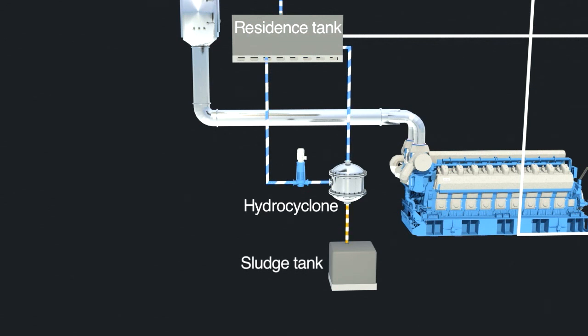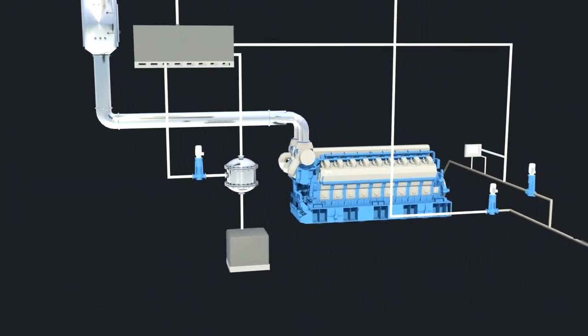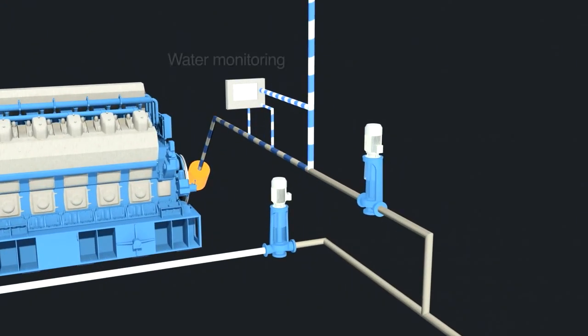The residue sludge from the hydrocyclones is led to a sludge tank. The non-hazardous sludge has to be disposed of at port and cannot be incinerated. The seawater is monitored for pH, temperature, and turbidity both at inlet and outlet.